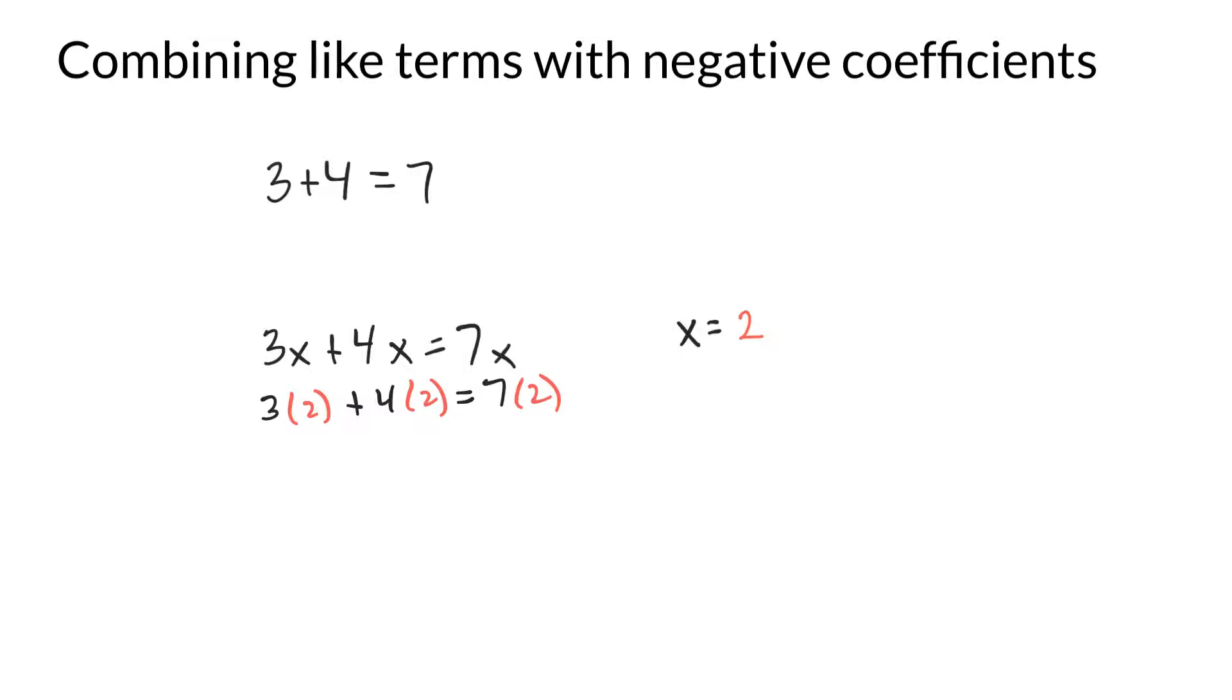And that should be equal to 7 times 2. Well, 3 times 2 is 6. And 4 times 2 is 8. And 7 times 2 is 14. And yeah, 6 plus 8 is 14. So 14 equals 14. And that checks out. So that works.